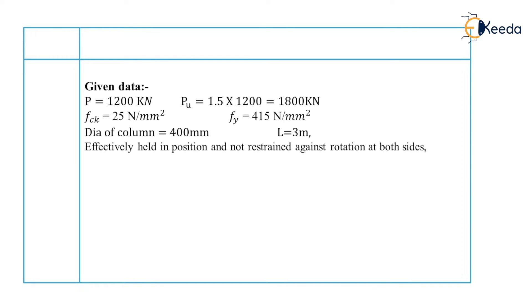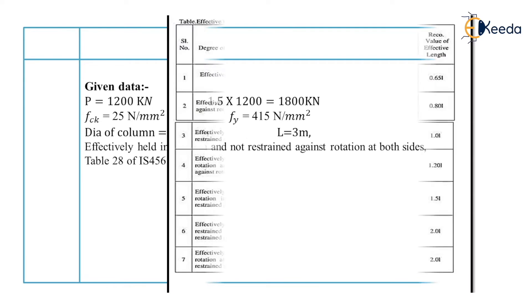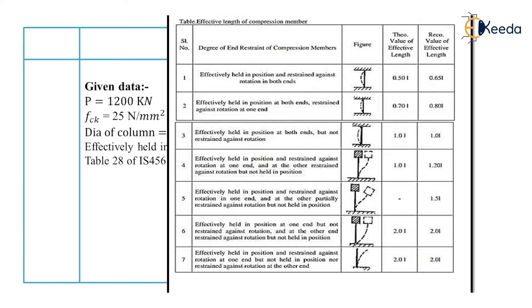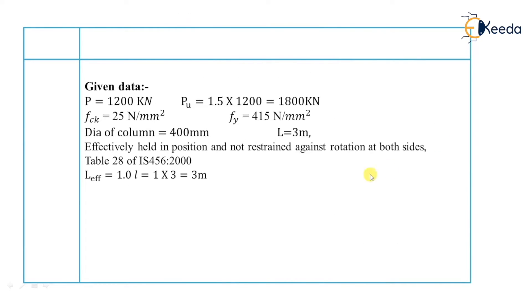The condition is given as effectively held in position and not restrained against rotation at both ends. We will refer to Table 28 of IS456 and find the condition effectively held in position at both ends but not restrained against rotation, which is case number 3. The recommended value of effective length by IS456 is 1 into L. Therefore, effective length L_effective is equal to 1 into L, which is equal to 3 meters.